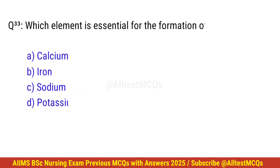Question number 33. Which element is essential for the formation of hemoglobin? Correct option is B. Iron.